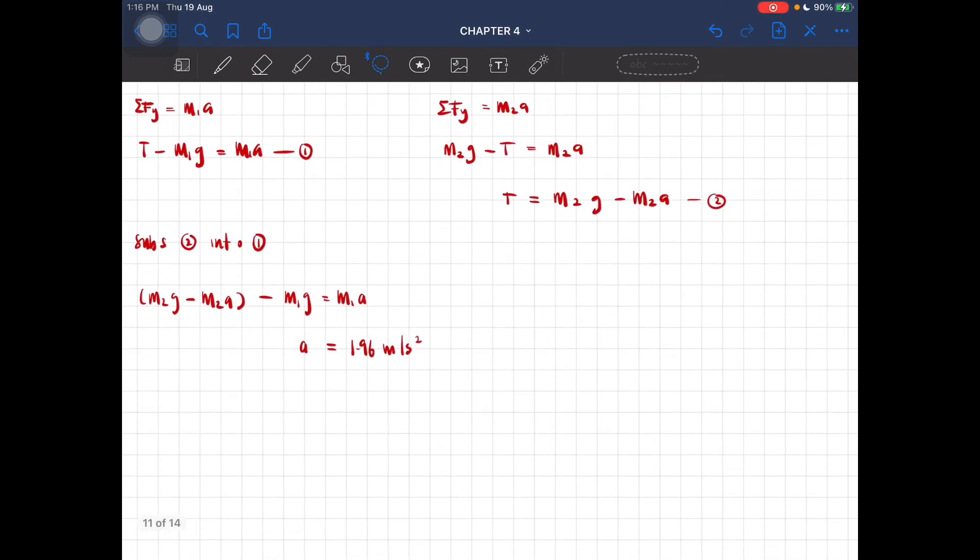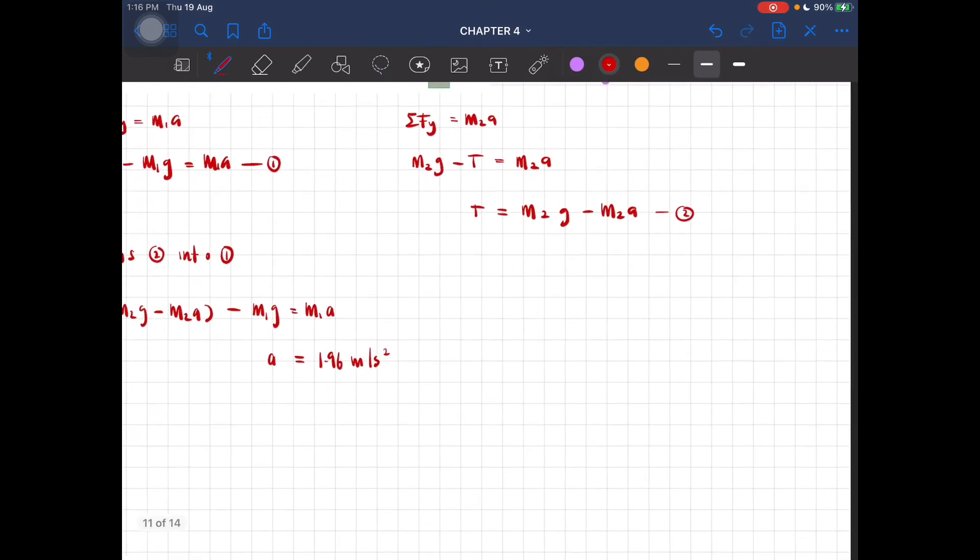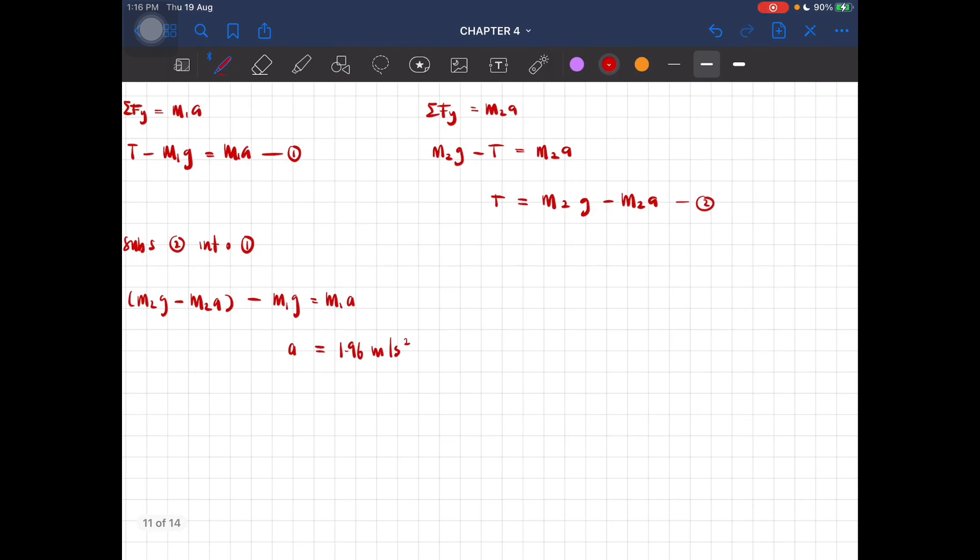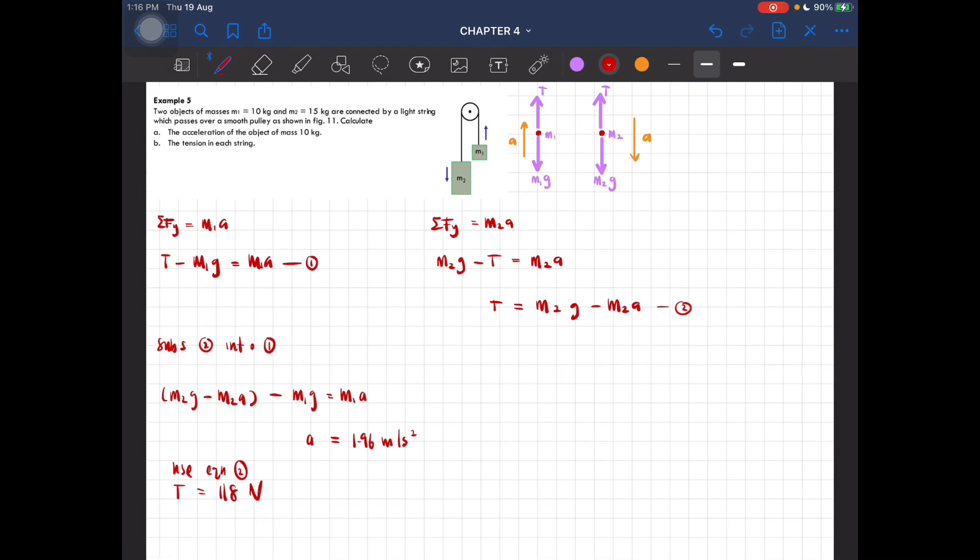And then now you have to find the tension - tension for each string. T is equal to - use equation two. Just substitute this value of acceleration into this to get the tension. You'll then get the value of tension to be 118 newtons. So that is for example number five.